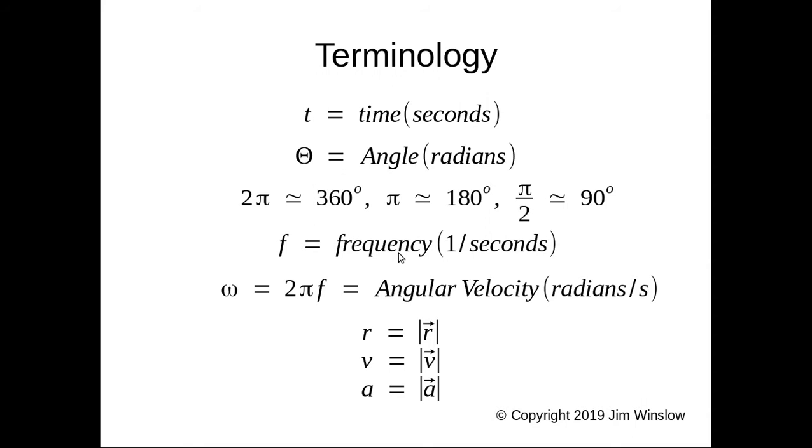It's a measure of how many times something happens per second. So for instance, if something is going around a hundred times in a circle per second, the frequency would be a hundred. Now we have a concept of omega that would be 2π times the frequency and that is your angular velocity in radians per second.